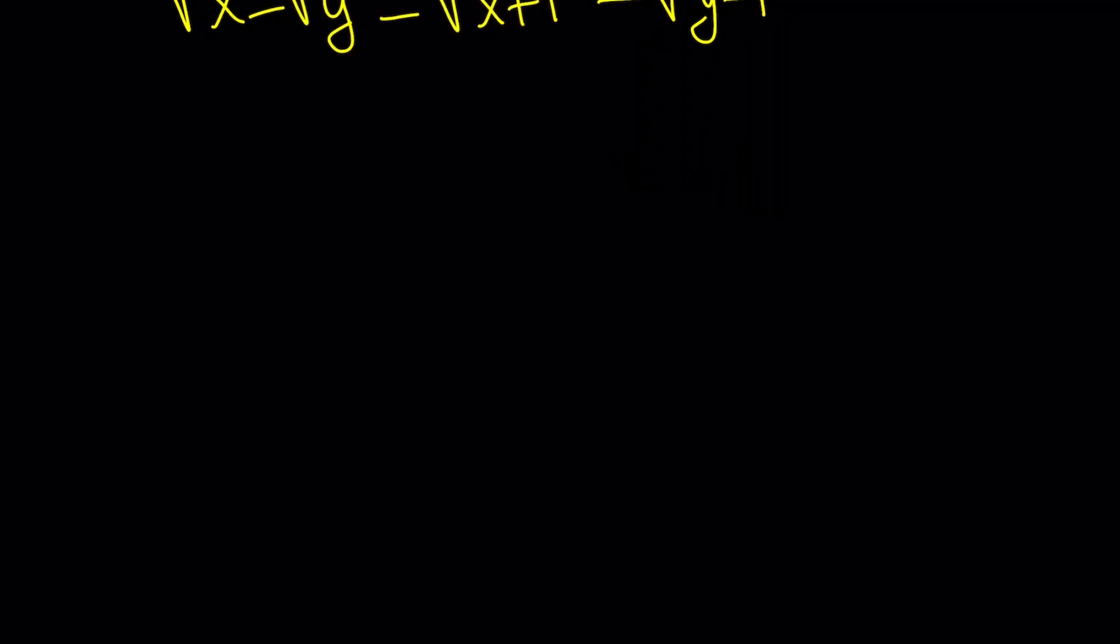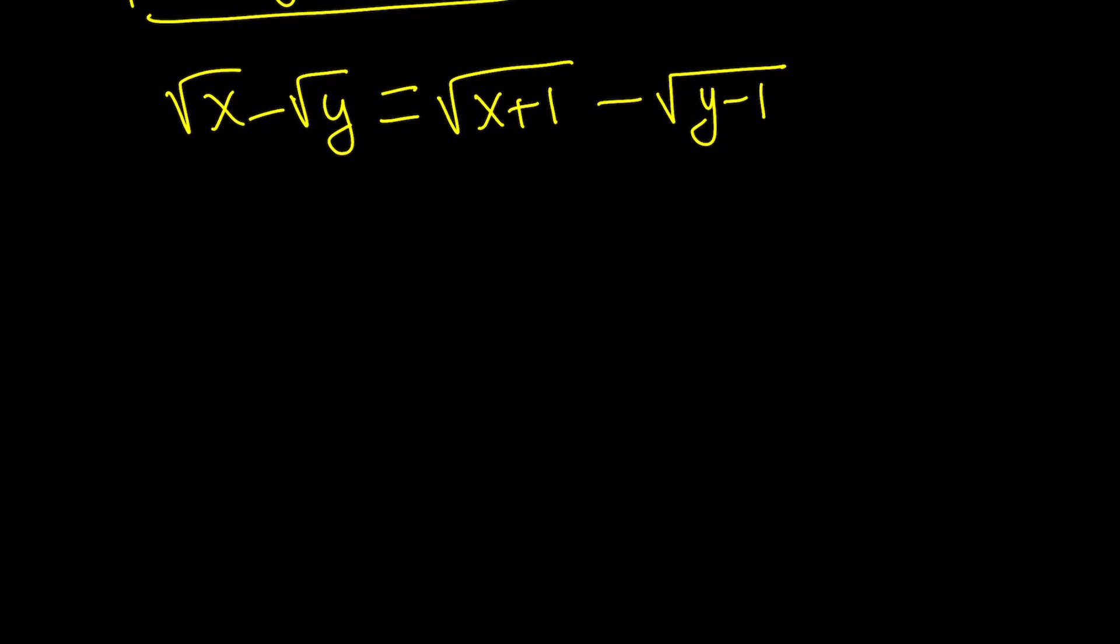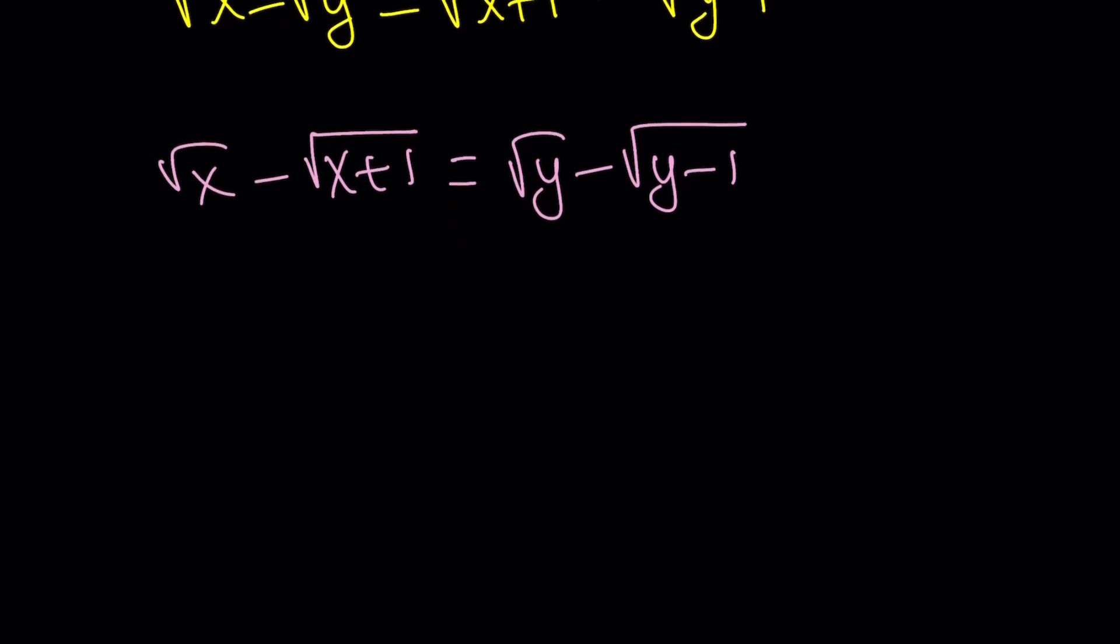Okay. So, one more time, this is our expression. Square root of x minus square root of y equals square root of x plus 1 minus the square root of y minus 1. So, let's go ahead and take a closer look. I'm going to write it in a nicer way. Put the x's together because they are good friends. And I put the y on the other side. And hopefully, this makes more sense. Here's what we're going to be looking at.